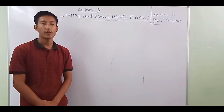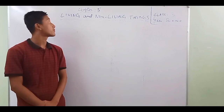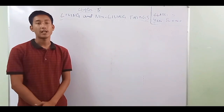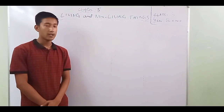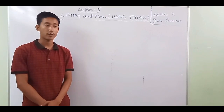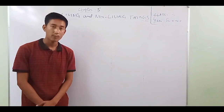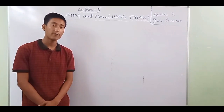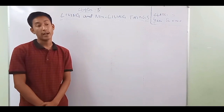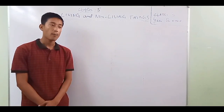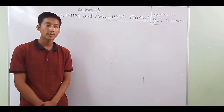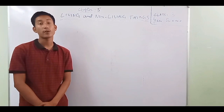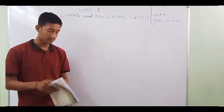Hello students, today we are going to discuss Chapter 5: Living and Non-Living Things of Class 3 General Science. Before starting, let's make it clear. Things like chairs, tables, and spoons which do not have life are called non-living things. When you go outside, you find trees, birds, insects, animals, and human beings — these all come under living things.